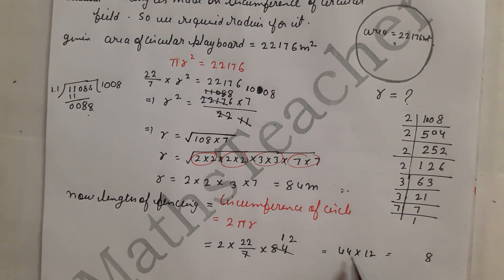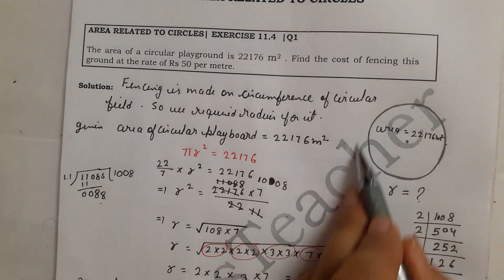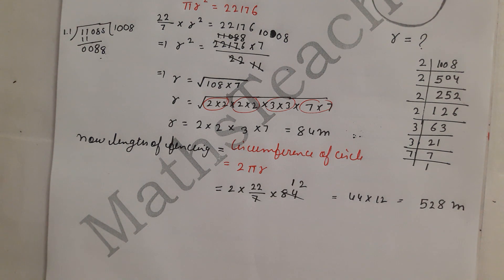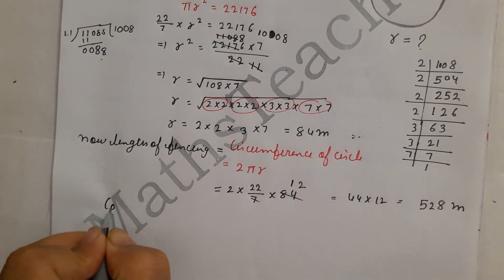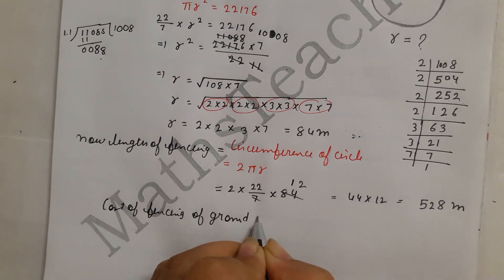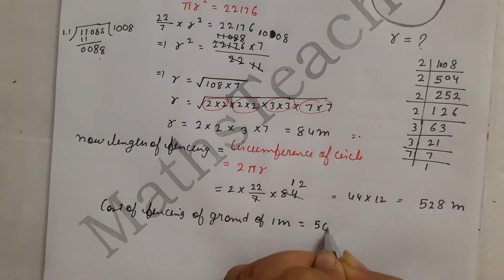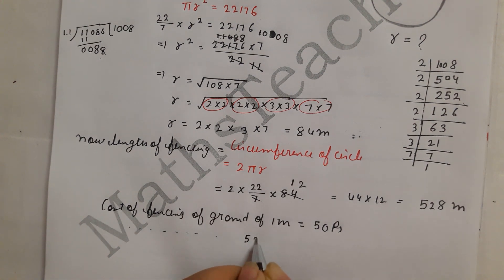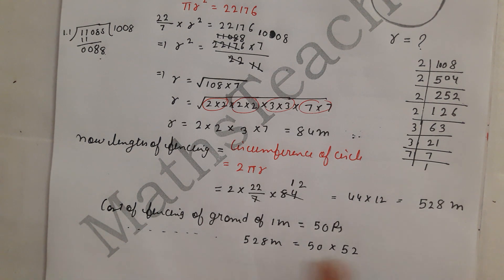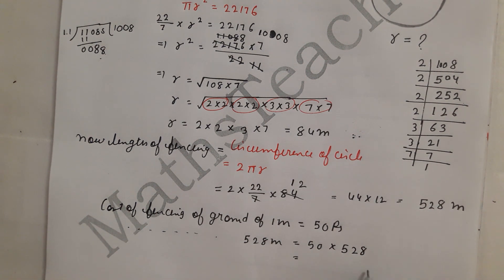So we know that we have to multiply by 50 to find the cost. 50 x 528: 0 as it is, 8 x 5 is 40 so write 0 and carry 4. 5 x 2 is 10 plus 4 is 14, write 4 and carry 1. 5 x 5 is 25 plus 1 is 26. So the answer is 26,400.